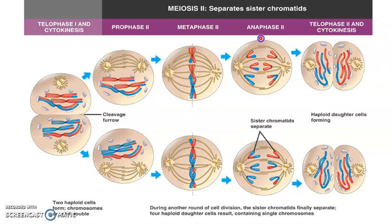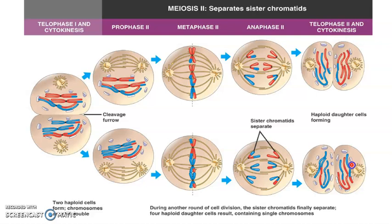Now we get to anaphase II. It's the sister chromatid pairs, or the chromosomes, that do split during this stage. So we do have a temporary doubling of chromosomes here again — we went from three in each cell to now, once the centromeres split, six chromosomes in each of these two cells. And we get to the point where telophase II and cytokinesis starts to happen, where now four cells are being produced. You can see the cleavage furrow starting to happen in each of these cells.